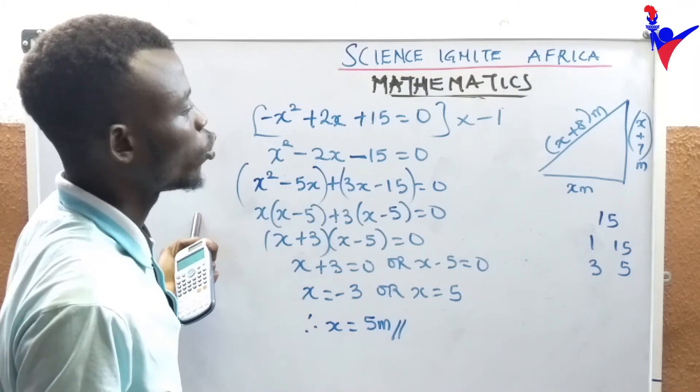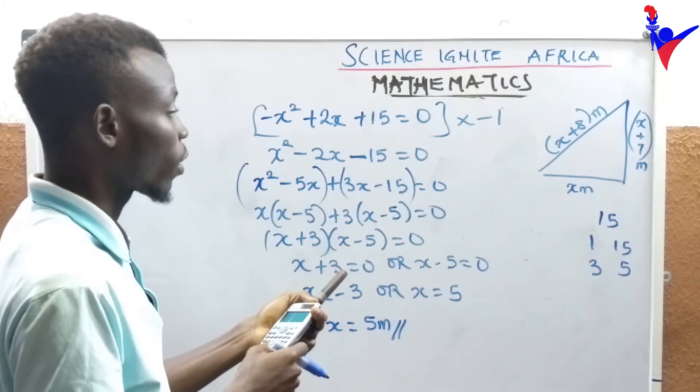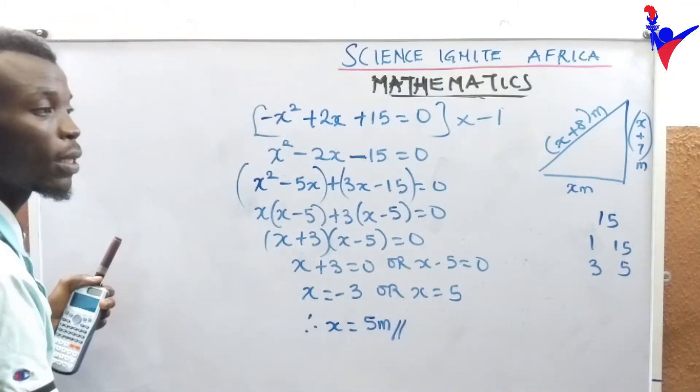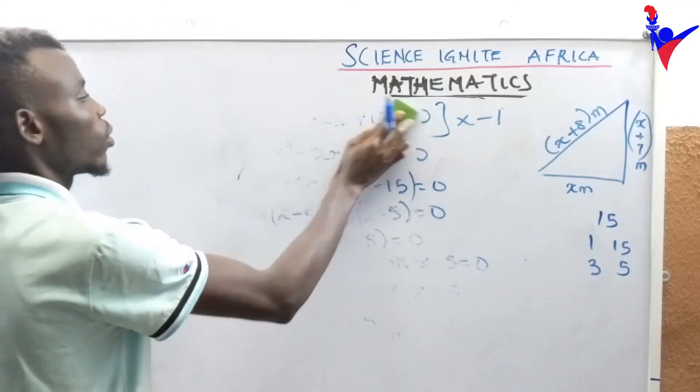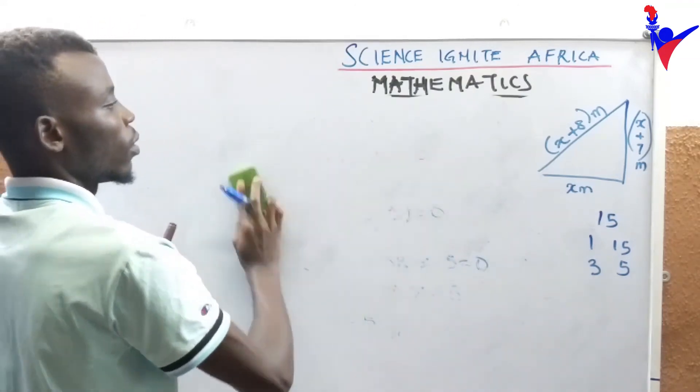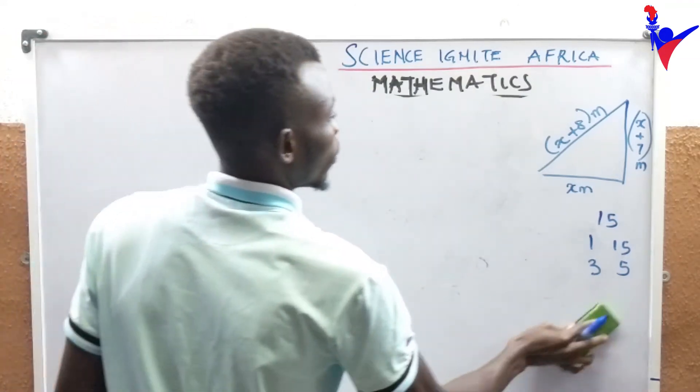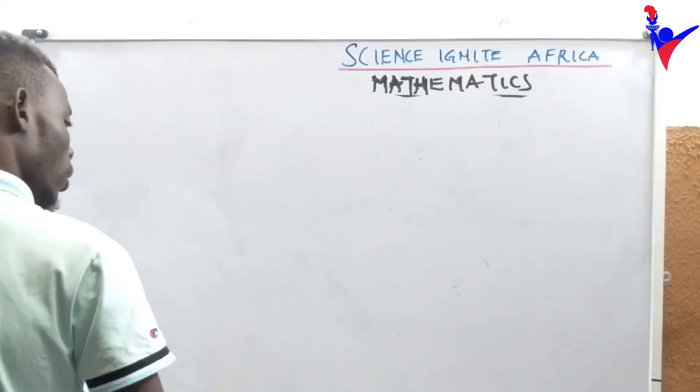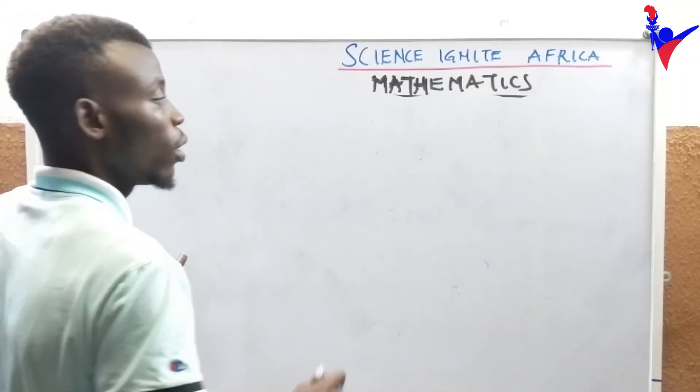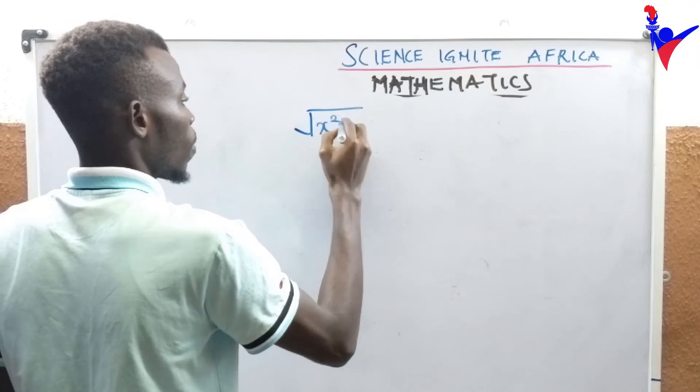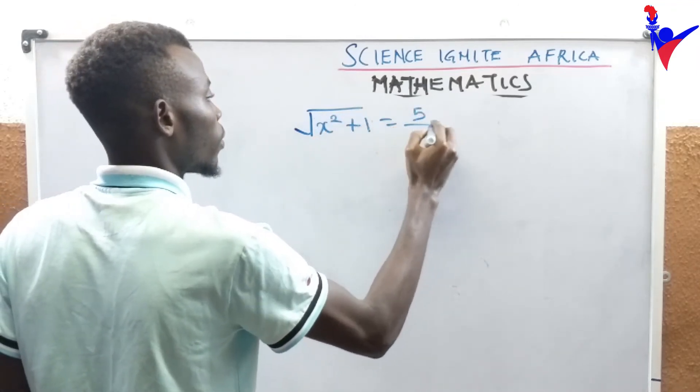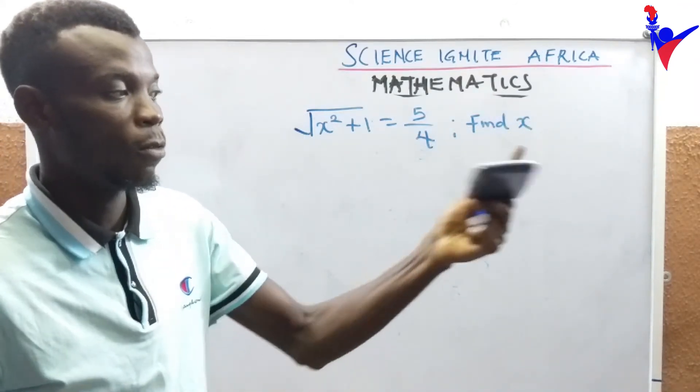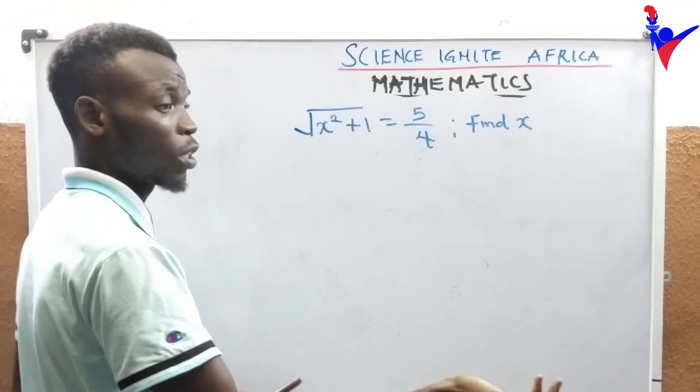I'm sure you'll be able to solve this. Let's move to the next question. Next question, we have: square root of x squared plus 1 equals 5 over 4, find x. What's the first thing we do?